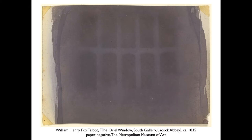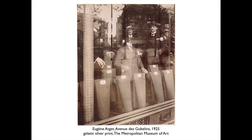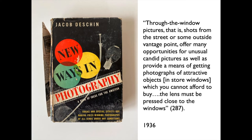For nearly 200 years, photographic instructional manuals warned against distracting reflections. Even in the 1920s, Eugène Atget's photographs of reflections in Parisian shop windows seemed so otherworldly that they served as inspiration to the surrealists. Photographers were taught to hold their lenses against the window glass to avoid reflections. Or, when possible, they should open the window and shoot straight through it. Jacob Duchenne, the New York Times photo columnist, tells photographers in his book, New Ways in Photography, that they should keep the lens always pressed close to the windows.